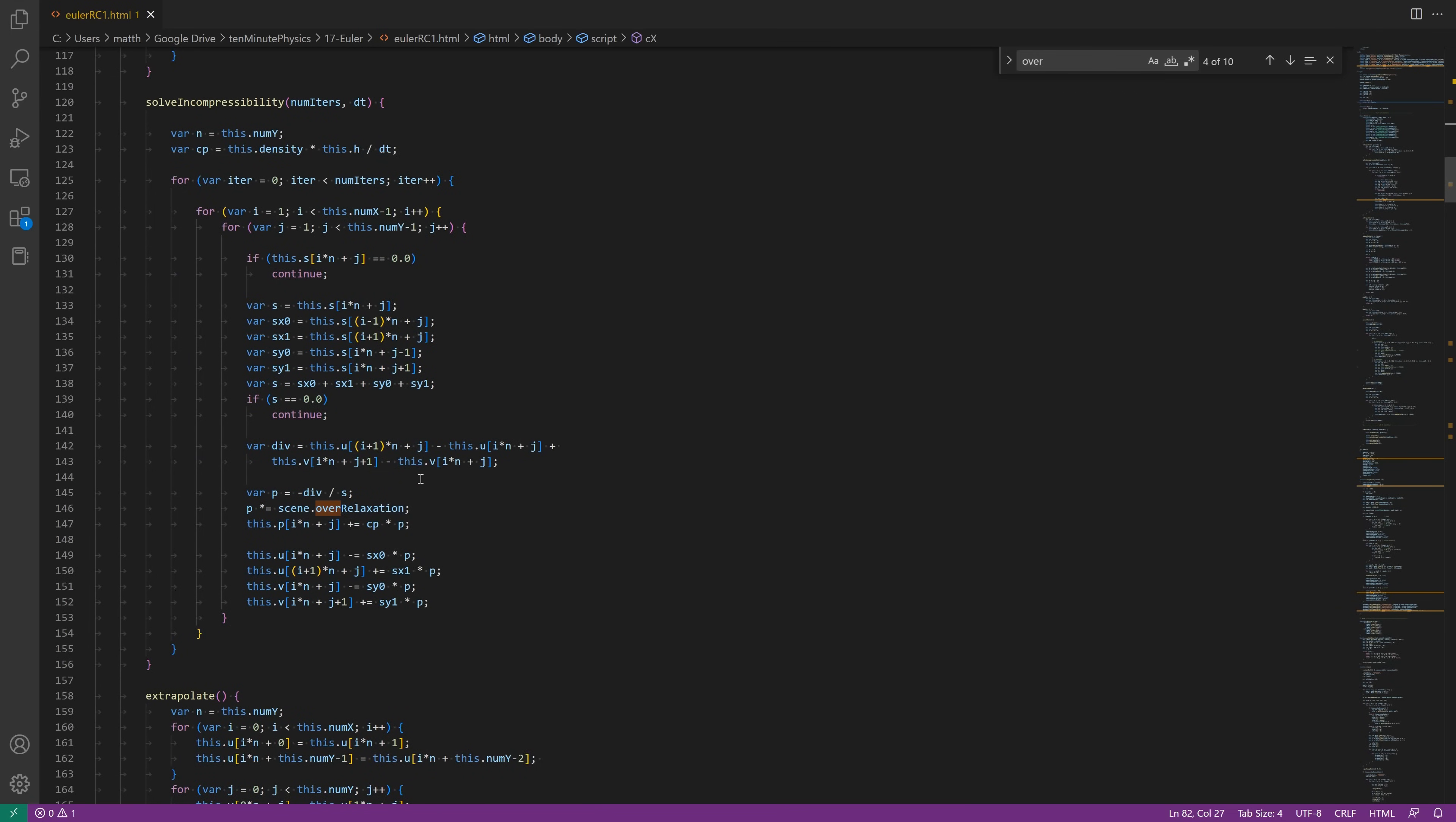Here is the projection method. I run multiple iterations and in each iteration I run through all the cells. I sum up all the s values. Then I compute the divergence and multiply it by the over-relaxation factor. Finally, I correct the velocity components.